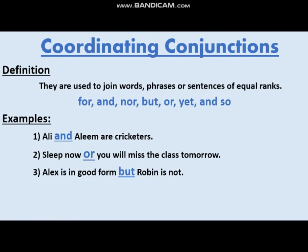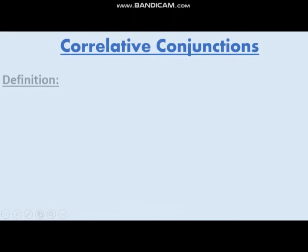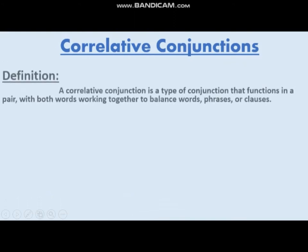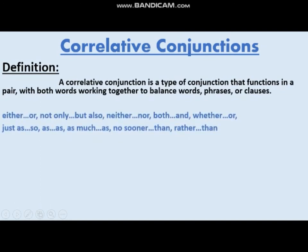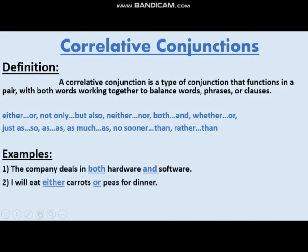When 'both' and 'and' come together they show that the subject is given two choices and is interested in taking both. 'I will eat either carrots or peas for dinner' — 'either/or' shows positivity, meaning the subject takes one thing from the given two options. 'Natalie likes neither milk nor cream cake' — 'neither/nor' shows negativity, meaning the subject is not interested in any of the given options. 'Do you care whether we have noodles or rice for dinner?' — 'whether/or' shows choice.